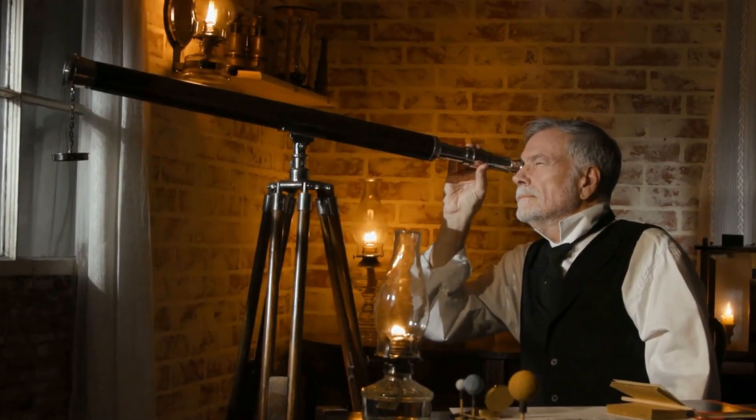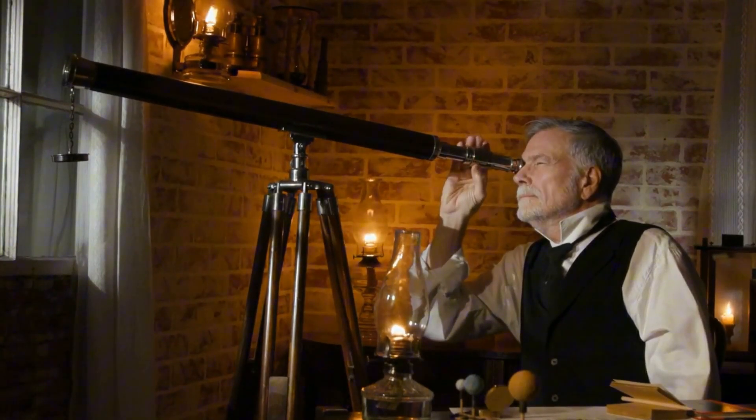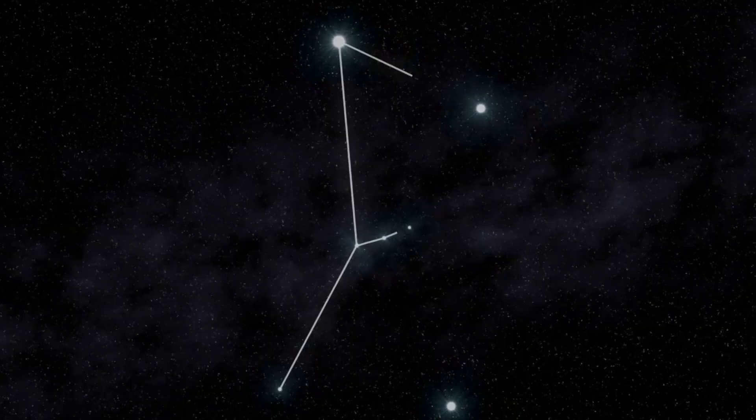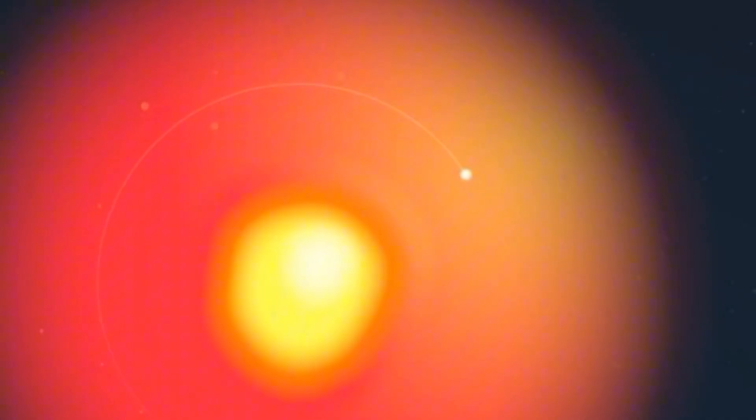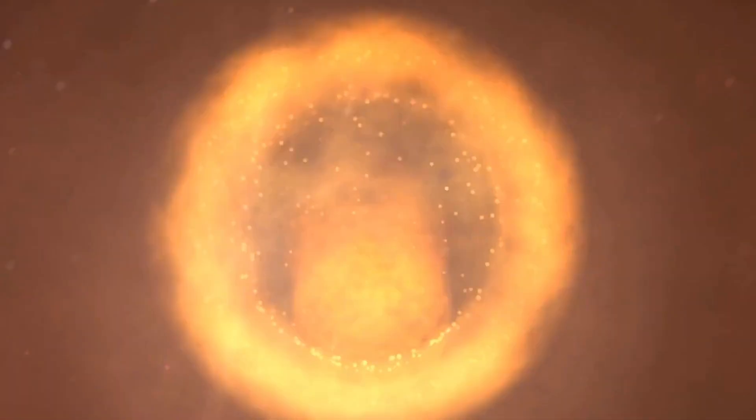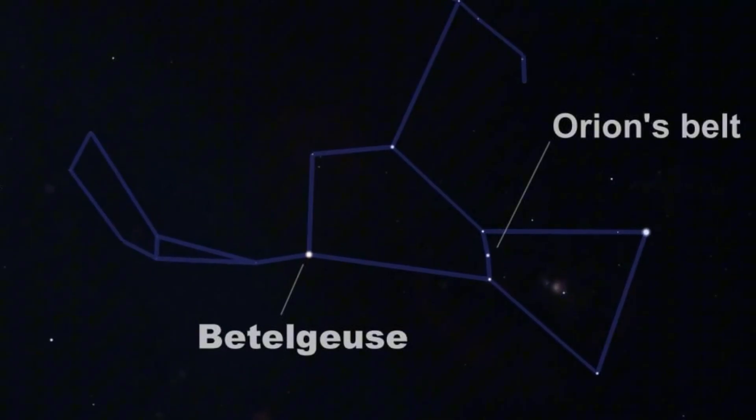For decades, astronomers have kept their eyes on one of the brightest, most enigmatic stars in the night sky, Betelgeuse, the colossal red supergiant resting in the shoulder of Orion.